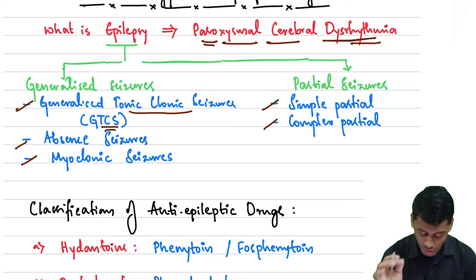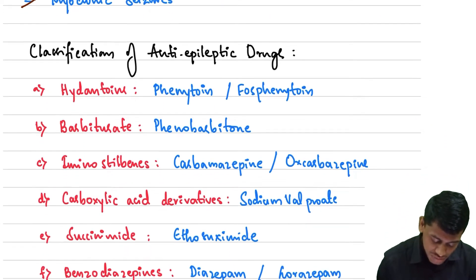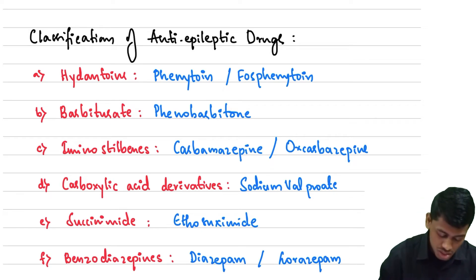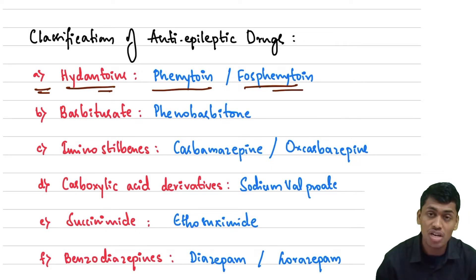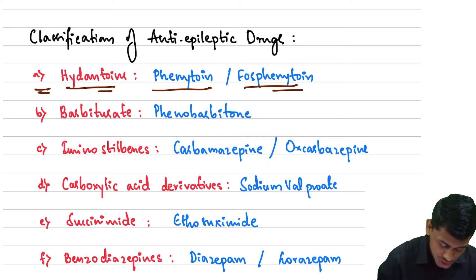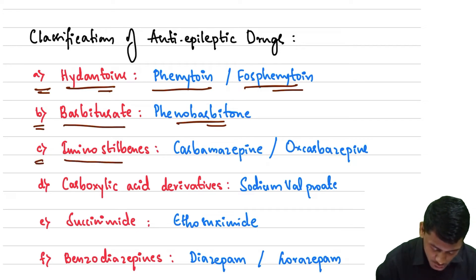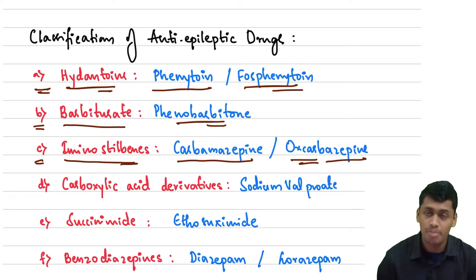The classification of anti-epileptic drugs: the first group is the hydantoins, which includes phenytoin and fosphenytoin — fosphenytoin is the prodrug of phenytoin. The second group is the barbiturates, which includes phenobarbitone. The third group is the iminostilbenes, which includes carbamazepine and oxcarbazepine.